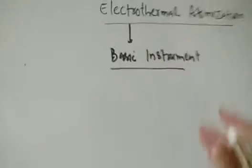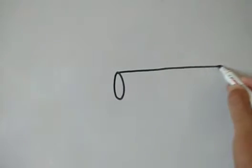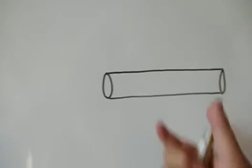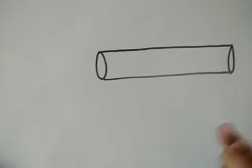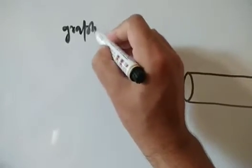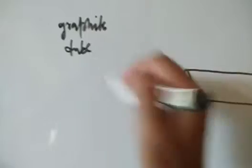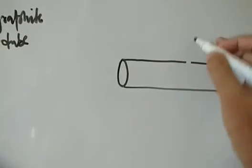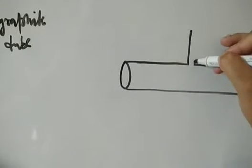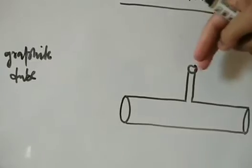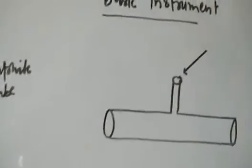The main component is a graphite tube — it's a long graphite tube. Graphite is a carbon material. It is hollow at both ends, and at the middle point there is an opening for sample injection. The sample, in the form of small droplets or mist from the nebulizer, is introduced through this opening.